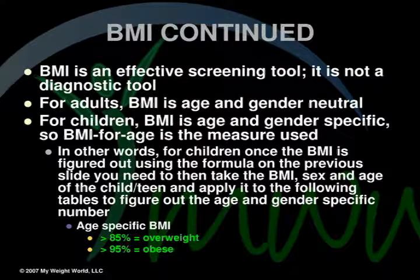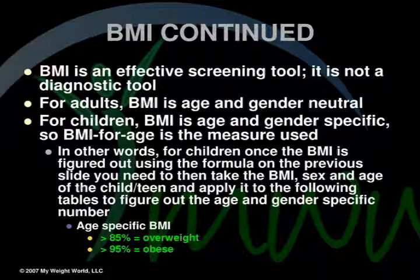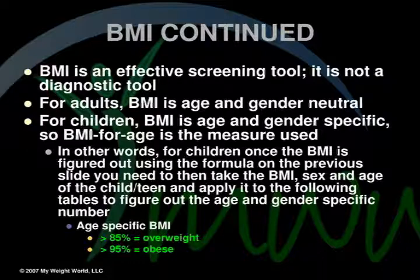BMI is an effective screening tool, not a diagnostic tool. For adults, BMI is age and gender neutral — it doesn't matter how old you are or your sex. For children, BMI is age and gender specific, so BMI for age is the measure used. Once the BMI is calculated, you take the BMI, sex, and age of the child or teen and apply it to the tables to determine the age and gender specific number. With the age-specific BMI, greater than 85th percentile equals overweight, and greater than 95th percentile equals obese.